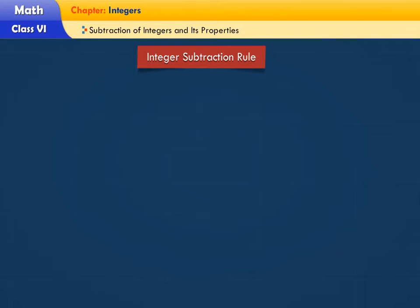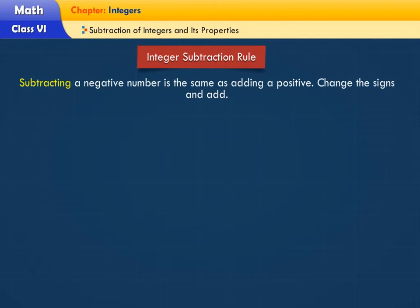Let's understand the integer subtraction rule. Subtracting a negative number is the same as adding a positive. Change the signs and add.